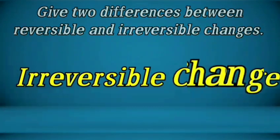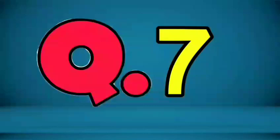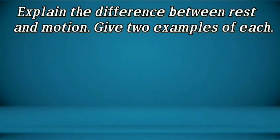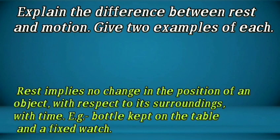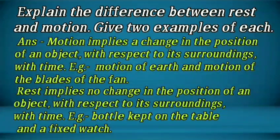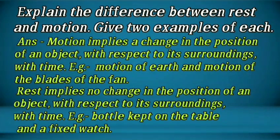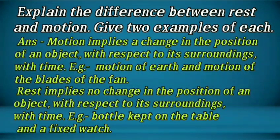Question number 7: Explain the difference between rest and motion; give two examples of each. Motion implies a change in the position of an object with respect to its surroundings over time — examples: motion of the Earth and motion of the blades of a fan. Rest implies no change in the position of an object with respect to its surroundings over time — examples: a bottle kept on a table and a fixed watch.